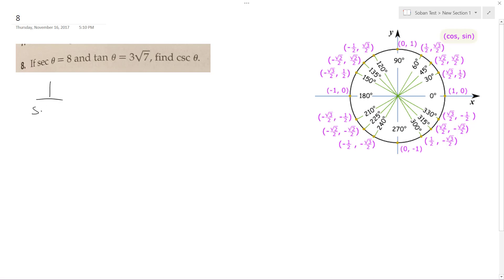So the cosecant is equal to 1 over the sine theta. So 1 over cosine, which is the secant theta, is equal to 8.